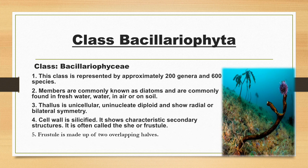Class Bacillariophyta is represented by approximately 200 genera and 6,000 species. Members are commonly known as diatoms and are found in freshwater, in air, or in soil. The thallus is unicellular and uninucleate, diploid, and shows radial or bilateral symmetry. The cell wall is made up of silica, and they show secondary structure. The frustule is made up of two overlapping halves.